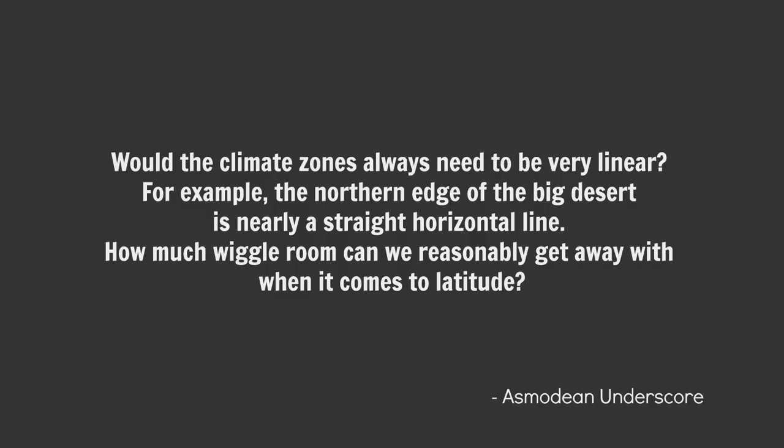Would the climate zones always need to be very linear? For example, the northern edge of the big desert is nearly a straight horizontal line. How much wiggle room can we reasonably get away with when it comes to latitude? There is a lot of wiggle room, but that wiggle room should be dictated by terrain. The reason why my world is so linear when it comes to climates is, well, many things, but one: it's in its supercontinent phase. It hasn't got very many mountain ranges, and of those ranges, very few, if any, run north to south. All of this means that on my world, there are large expanses of uninterrupted land, all of which is at the same kind of altitude.